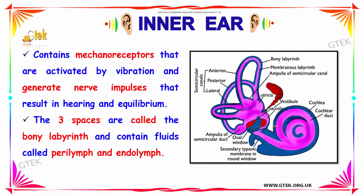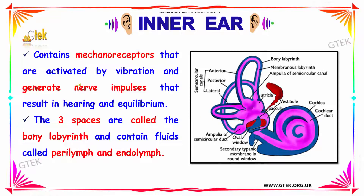The inner ear contains mechanoreceptors that are activated by vibration, and they generate nerve impulses which are transmitted to your brain to help the person in hearing. Your ear also helps in maintaining equilibrium. The three spaces present in your inner ear are the bony labyrinth, which contains the fluids called perilymph and endolymph.